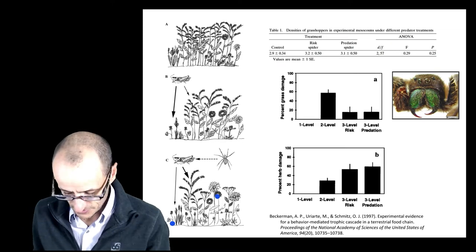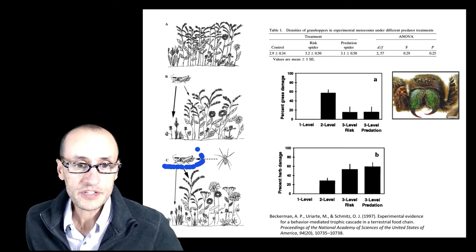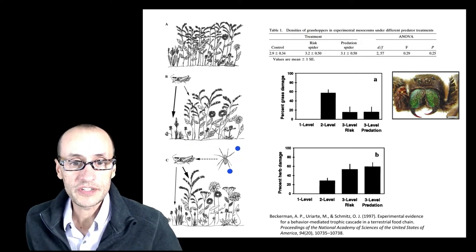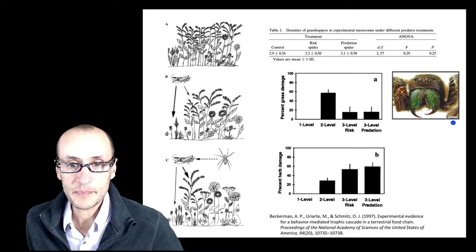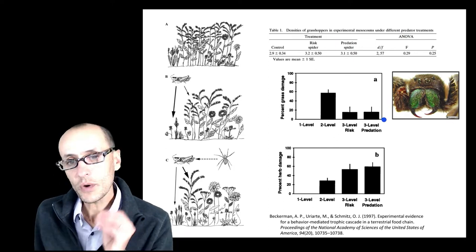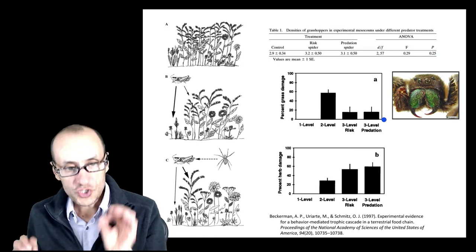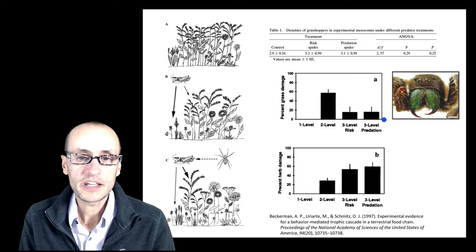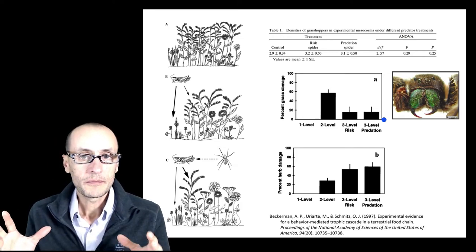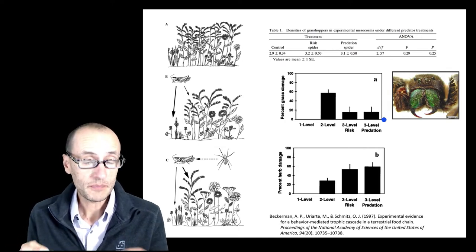The main herbivores in this particular system are grasshoppers right here. And the predators of these grasshoppers are these spiders, either sit and wait spiders like this one here, and some jumping spiders like this one here. And what he did is he wanted to explore what happens with just the mere presence of a spider in an arena. So the spiders could have an effect just by their mere presence on the herbivores.